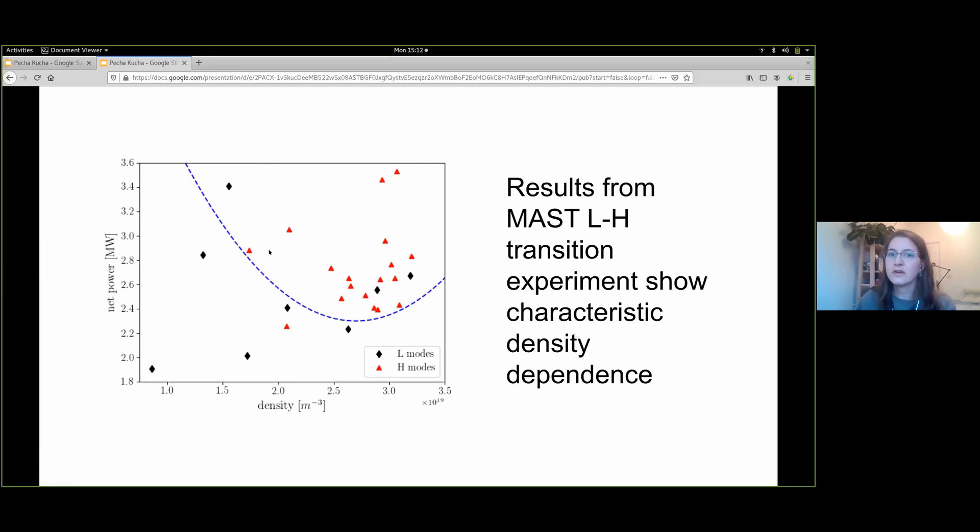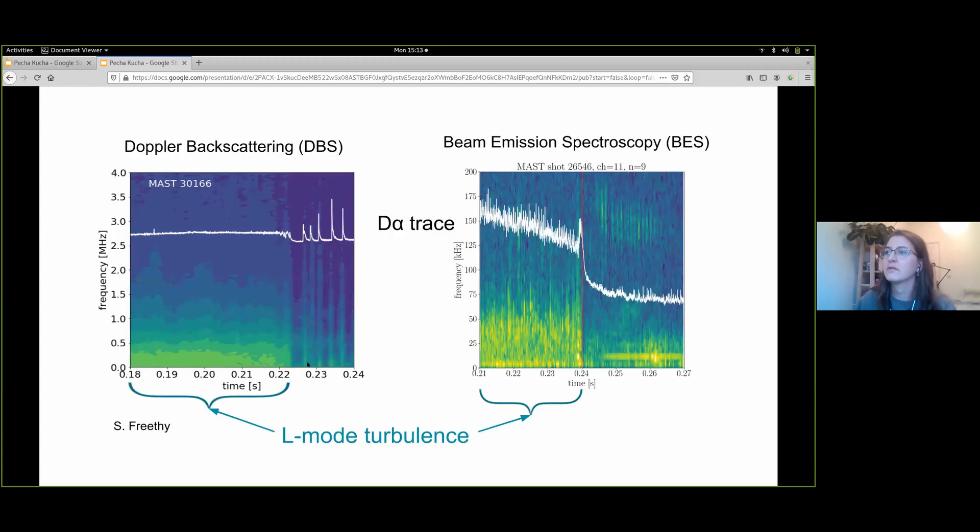In advance of these experiments, shots on MAST were studied to produce the net power versus density plot for L and H modes. The H modes are not real power thresholds since the transition was induced by dropping the height of the magnetic axis. The two regimes can already be assigned into different regions of the plot.